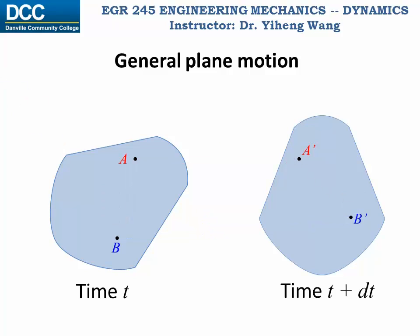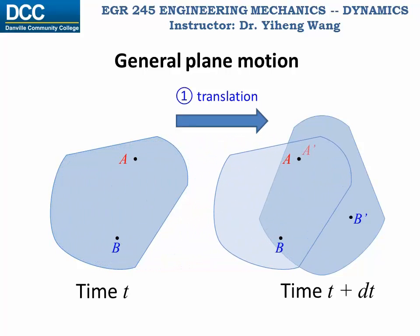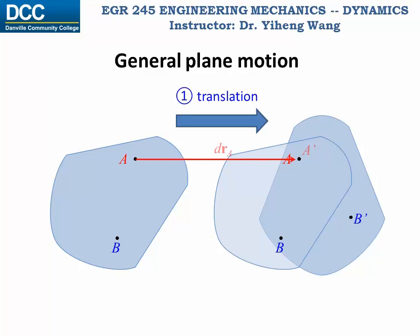Since general plane motion is the combination of translation and rotation, we can assume this motion happens in two steps. The first step is translation, during which point A moves to its new location. During translation, the displacement for all particles in this rigid body are all the same. Therefore, the displacement of point B is the same as point A, and the relative position of point B relative to point A stays the same as well.